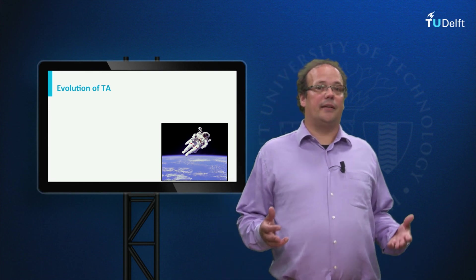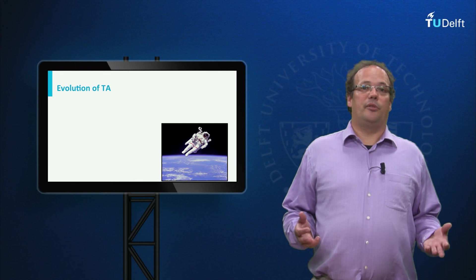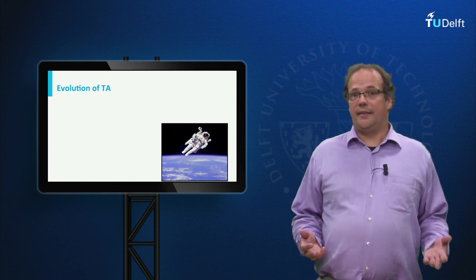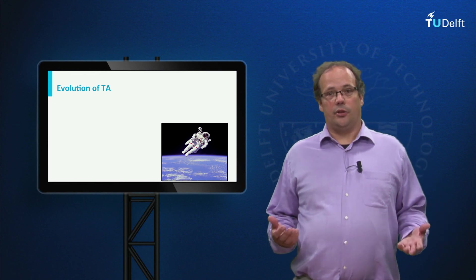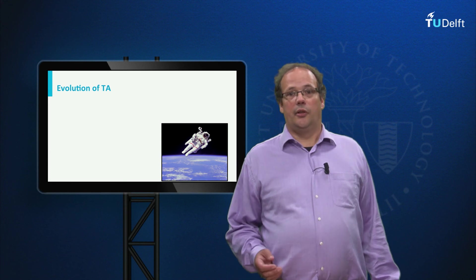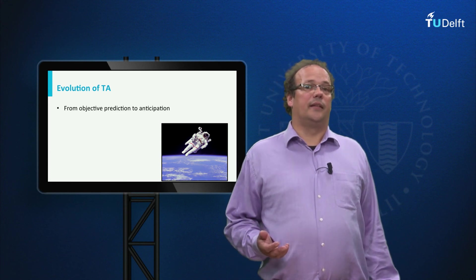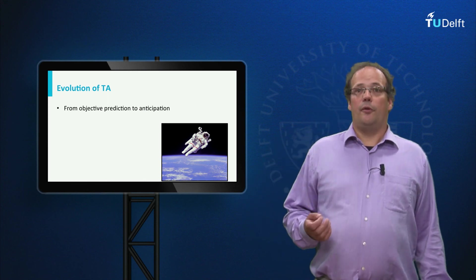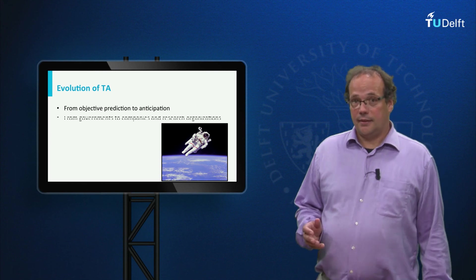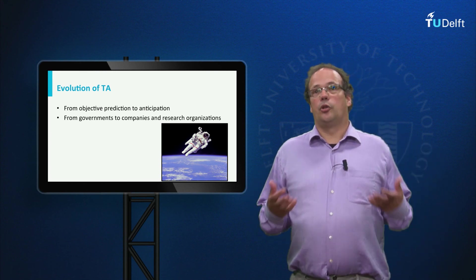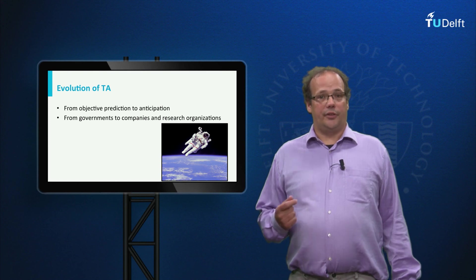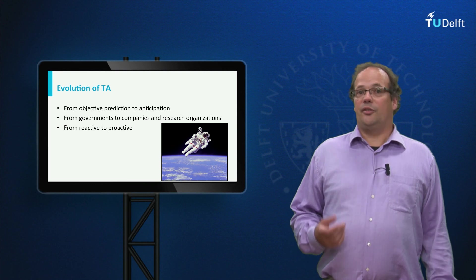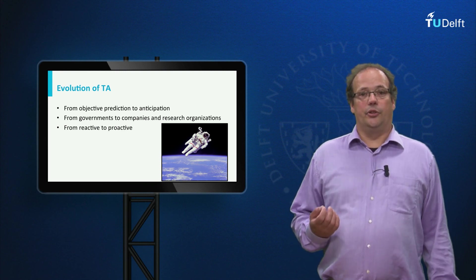Technology assessment started as an attempt to objectively predict the consequences of new technology for policy makers. However, it has evolved over time. First, there is a development from objective prediction of expected consequences to anticipation of possible consequences. Second, it went from governments to companies and research organizations. And third, where it initially was more reactive, it is now more proactive and it tries to influence design and R&D — research and development.